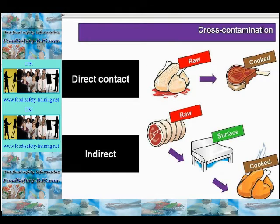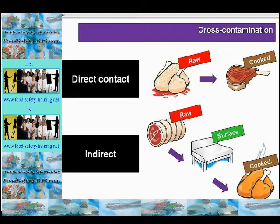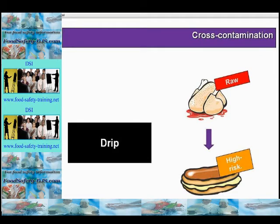This slide shows direct contact cross-contamination and indirect contact cross-contamination. Direct contact is when products — for example raw and cooked or high-risk food — are actually touching or in close proximity. Indirect cross-contamination is when bacteria are transferred to the high-risk food from the raw food via a vehicle, such as a work surface that hasn't been cleaned properly. Another form is drip contamination — raw meat juices dripping onto high-risk food. So if storing raw food and high-risk food in the same fridge, the high-risk food must be above the raw food and both items must be covered.